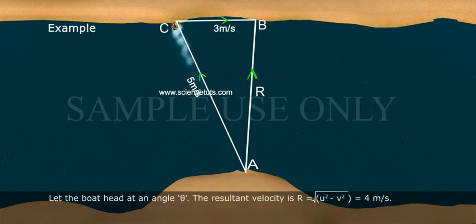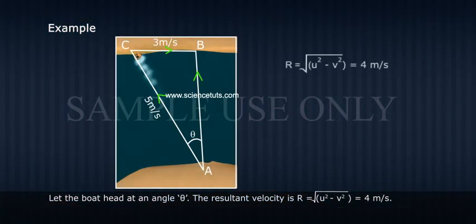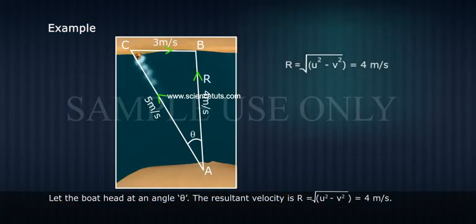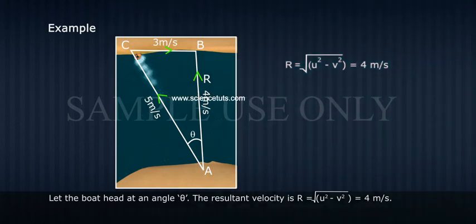Let the boat head at an angle theta. The resultant velocity R equals the square root of u squared minus v squared, which equals 4 m/s.